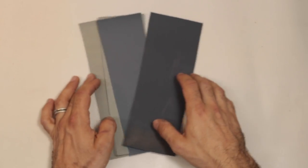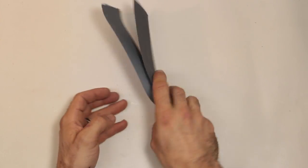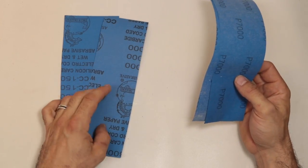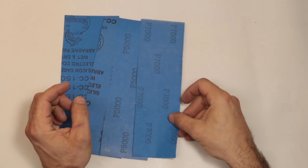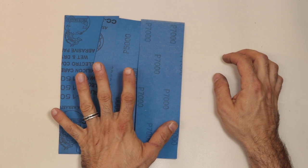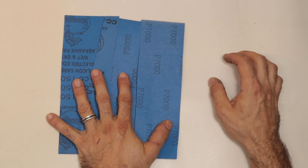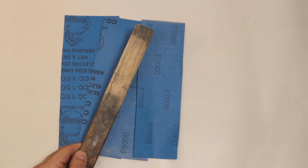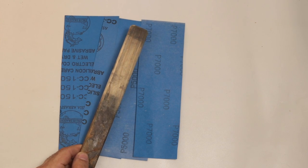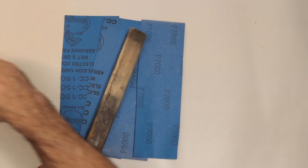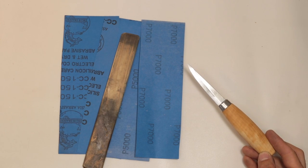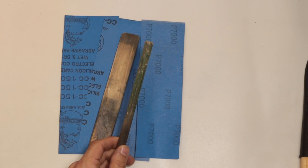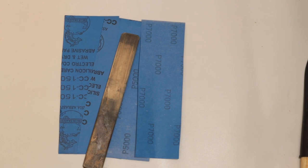What we've got here is a selection of high grit sandpapers. We've got some 1500, some 3000, some 5000, and 7000. We'll be using these to sharpen our tools. So in addition to these, you'll want something flat to wrap them around to sharpen your straight knife and the outside of your hook knife, and then you'll want a wooden dowel to wrap them around to sharpen the inside of your hook knife.